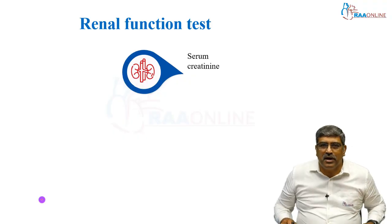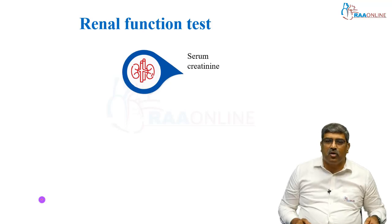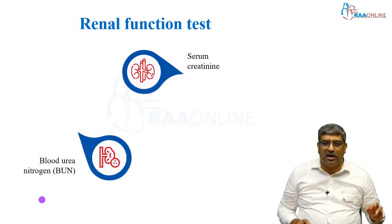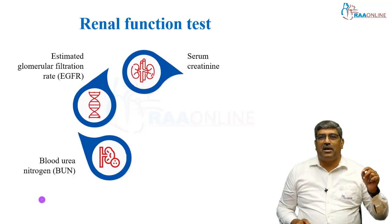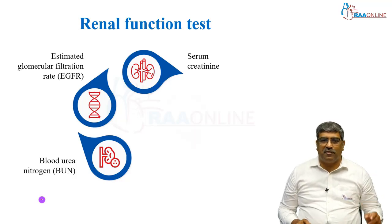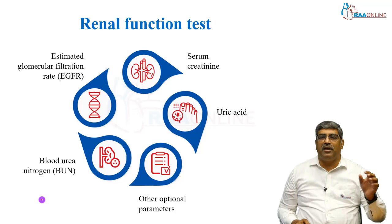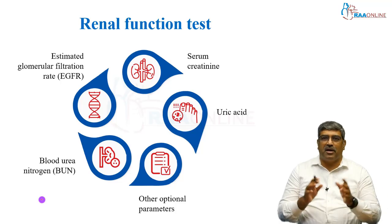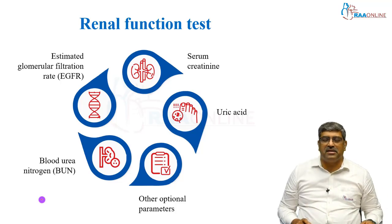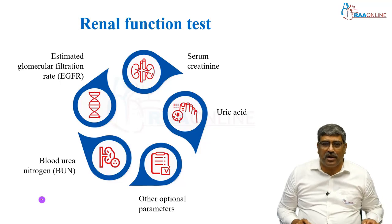Coming to renal function test, this includes serum creatinine, blood urea nitrogen, estimated glomerular filtration rate, uric acid, and other optional parameters like urine analysis or other tubular function parameters.